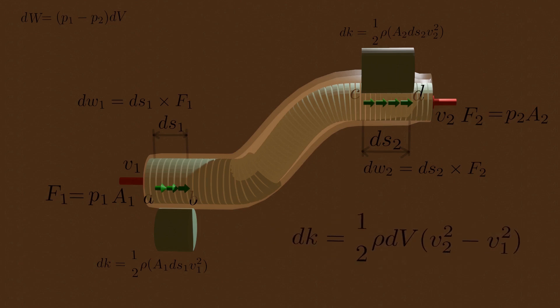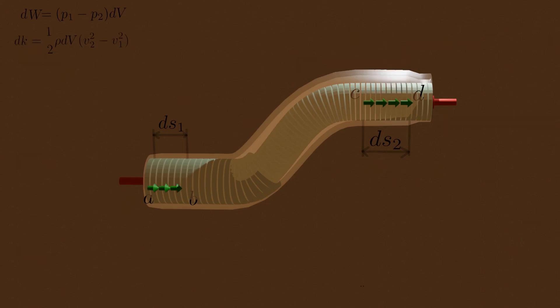What about the change in gravitational potential energy? At the beginning and end of DT, the potential energy for the mass between A, B and C, D is shown. Potential energy just depends upon the mass of fluid dm and the height y1 and y2. g is acceleration due to gravity.